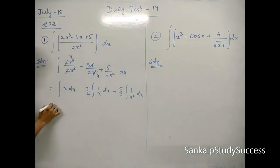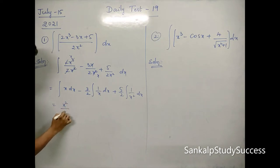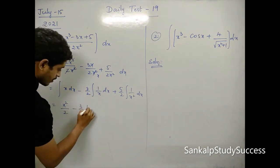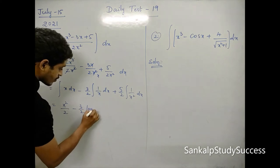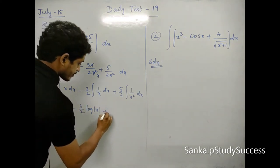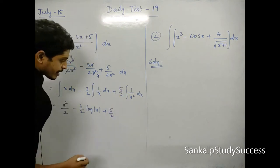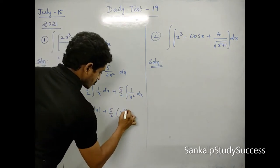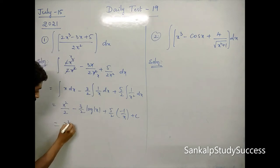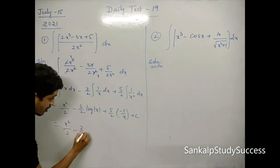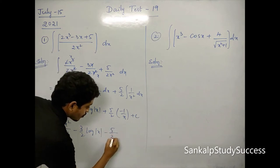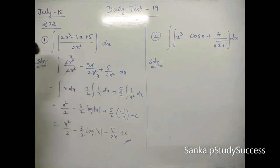Integral of x is x²/2. Then minus 3/2 times integral of 1/x, which is log|x| — log mod x is the correct version. Plus 5/2 times integral of 1/x², which is minus 1/x, plus c. So the final answer is x²/2 minus 3/2 log|x| minus 5/(2x) plus c. This is the answer.